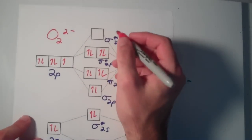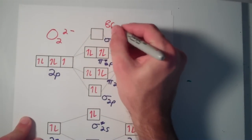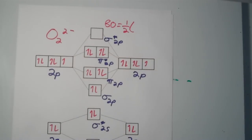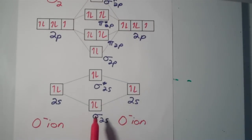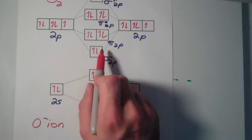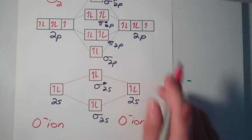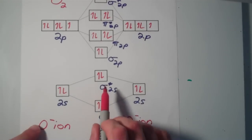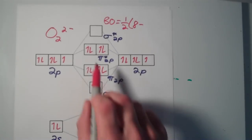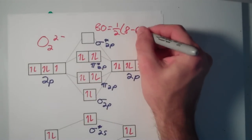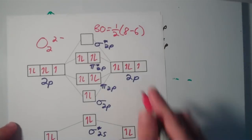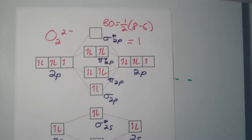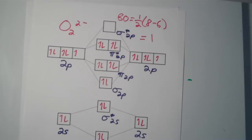The bond order is one-half times bonding electrons minus antibonding electrons. We have 8 electrons in bonding MOs, and 6 electrons in antibonding MOs, so bond order = one-half of (8 minus 6) = one-half of 2 = 1. So the bond order for the O2²⁻ ion is 1.